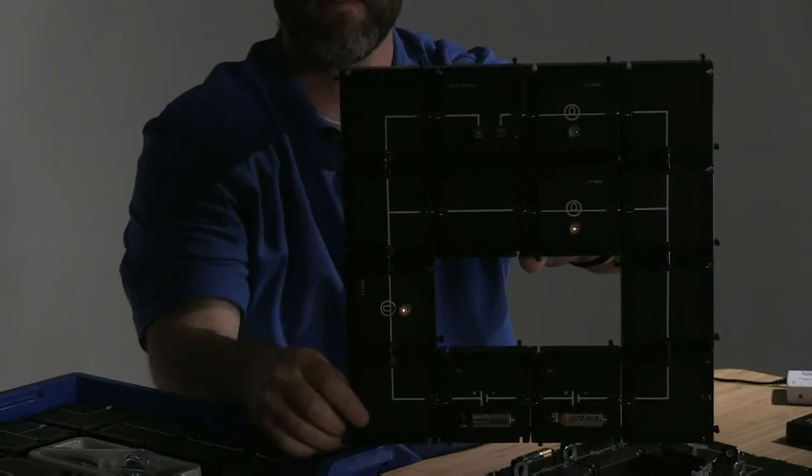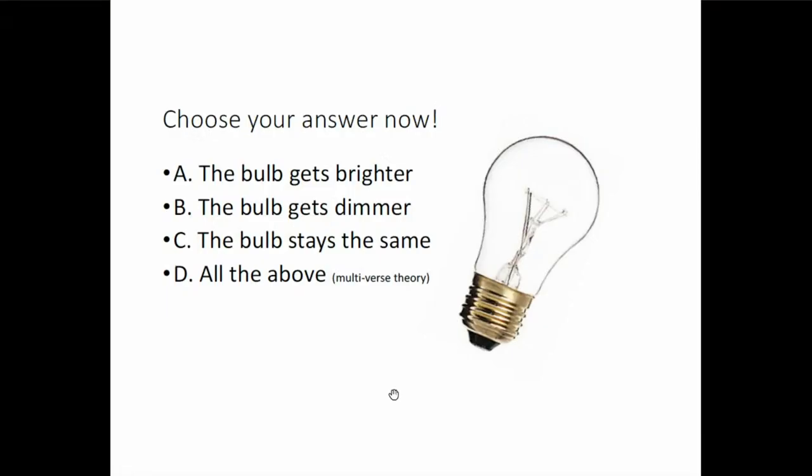What happens to the brightness of this bulb? Is it going to A, get brighter, B, grow dimmer, C, none of the above, stay the same, or D, all of the above, all at once, like magic? So take a second, think about it. Is the bulb going to get brighter, dimmer, stay the same, or do all three at once?